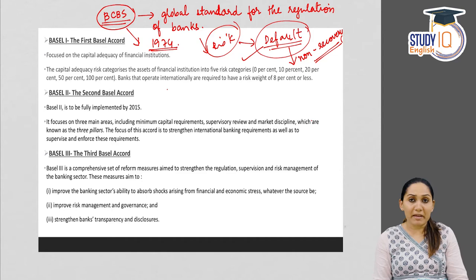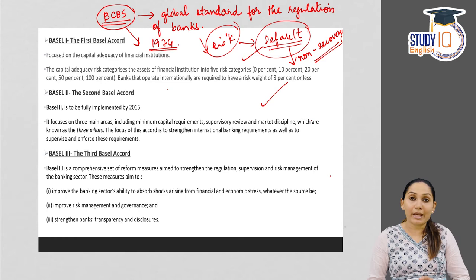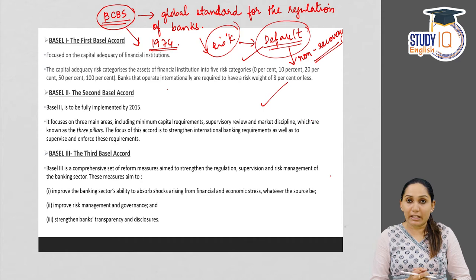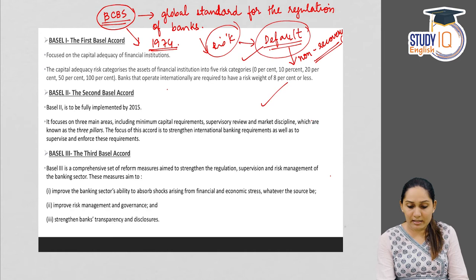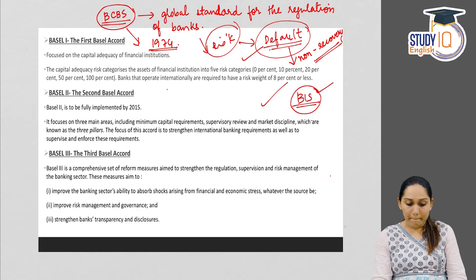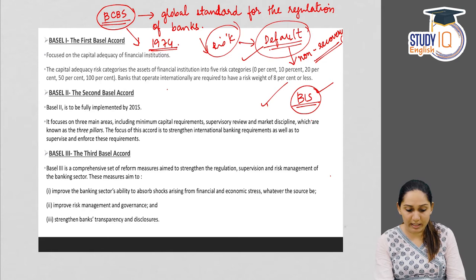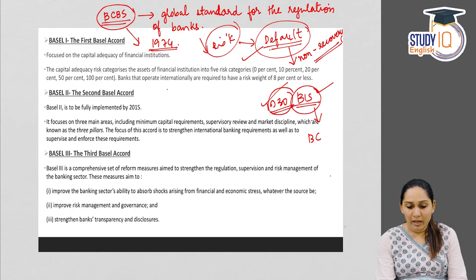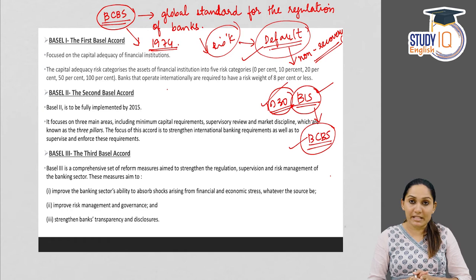The name 'Basel' comes from the headquarters of the BIS — the Bank for International Settlement — which is located in Basel, a city in Switzerland. The BIS was formed in 1930, and under the BIS we have the BCBS — the Basel Committee on Banking Supervision.